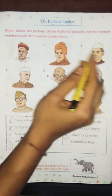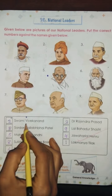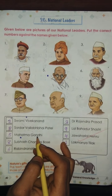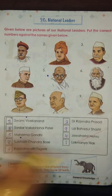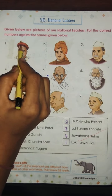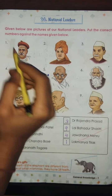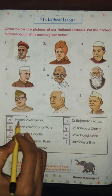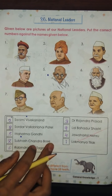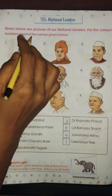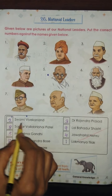Here are pictures of the national leaders, and the names are given below. You can see that numbers are there, but the numbers are jumbled. So what do you have to do, students? Numbers are given against each national leader's picture, and you have to write the correct number in front of the matching name. You have to choose the correct picture and write the number in the correct box.